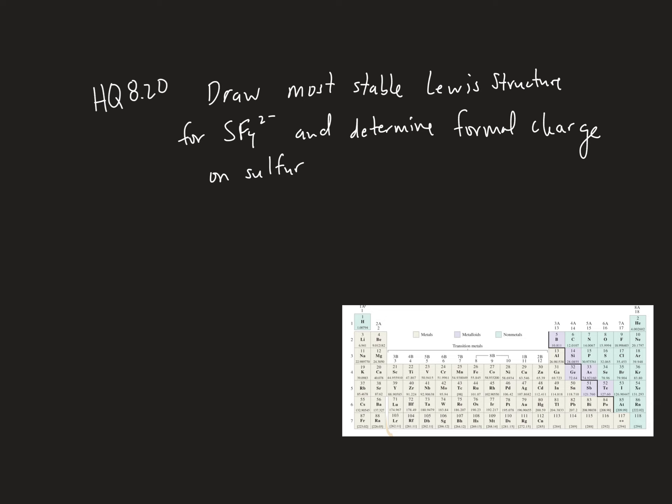For homework question 8.20, we're told to draw the most stable Lewis structure for SF4 2- and determine the formal charge on sulfur. So step one, we need to figure out all the valence electrons that we have to assign.